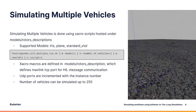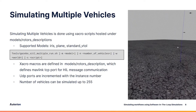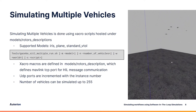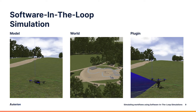We can also simulate multiple vehicles with a single script. What this does is use a xacro macro to increment the TCP port, which is used for the MAVLink HIL message communication between the flight stack and the simulator. The maximum number of vehicles that can be simulated is 255, which is the maximum number MAVLink can support with the sysid field.